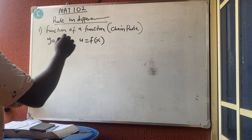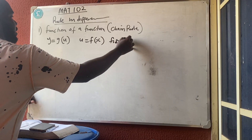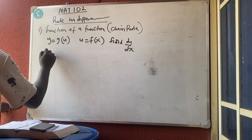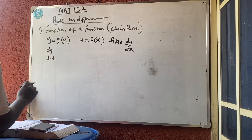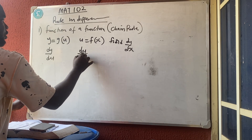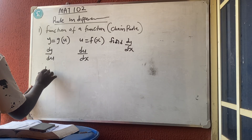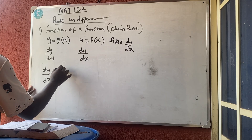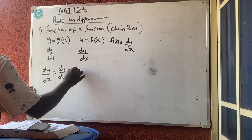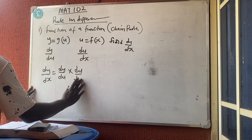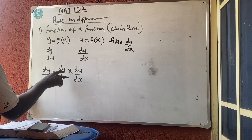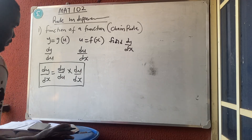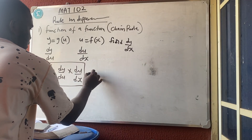Differentiating y with respect to u gives dy/du, and differentiating u with respect to x gives du/dx. To find dy/dx, we multiply: dy/dx = (dy/du) · (du/dx). The u's cancel and we get back dy/dx. This is the chain rule formula.